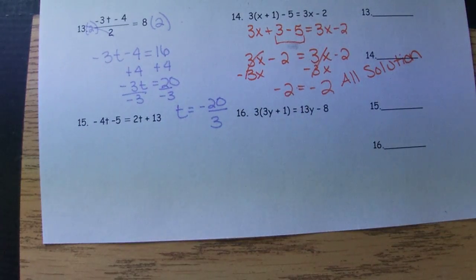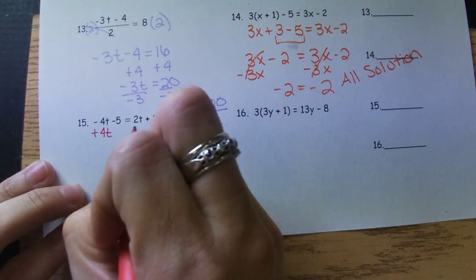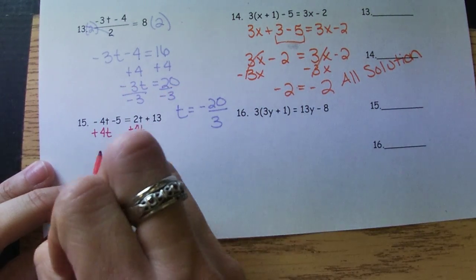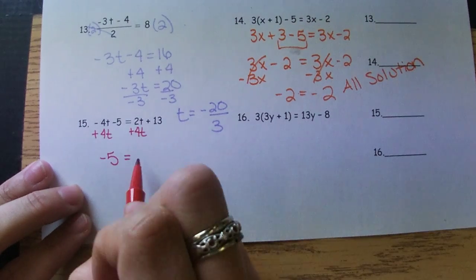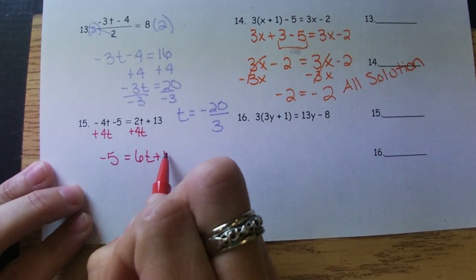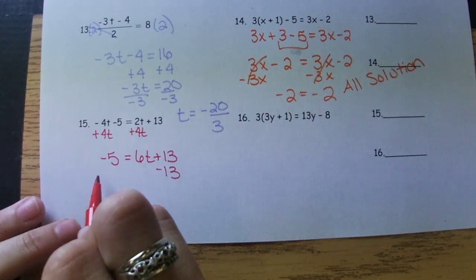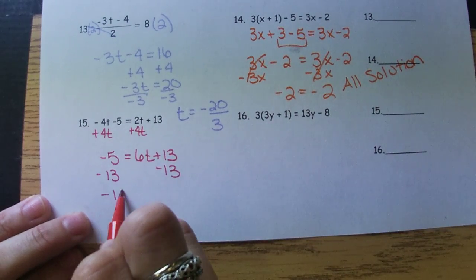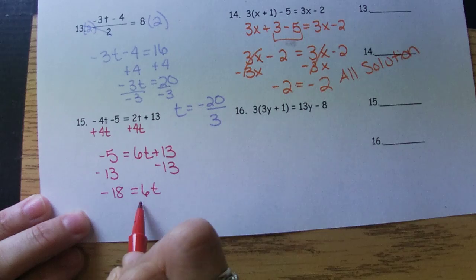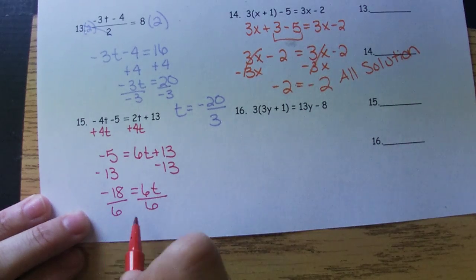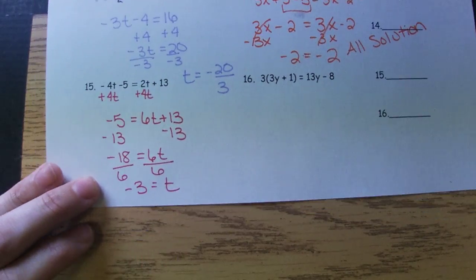Number 15, we have variables on both sides. I'm going to move the 4T because it's negative, which makes it smaller. So I'll have negative 5 equals 6T plus 13. I'm going to undo addition with subtraction. Divide. We'll get T equals negative 3.